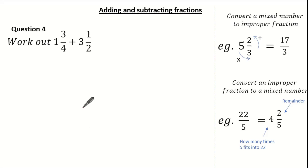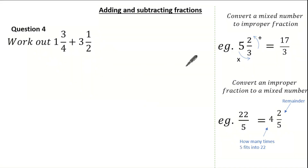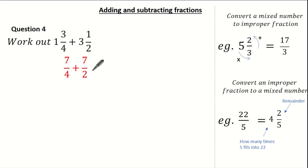Let's have a look at another exam question where we're asked to work out 1 and 3 quarters, add 3 and a half. See if you can give it a go and press pause if you need. Let's use our technique of converting a mixed number into an improper fraction. So 1 times 4 is 4, add 3 is 7, giving us 7 over 4. Then 3 times 2 is 6, add the 1 is 7, over 2. So I've converted both mixed numbers to improper fractions.